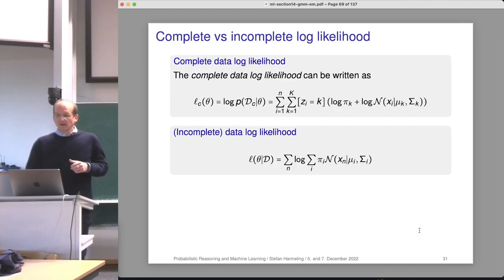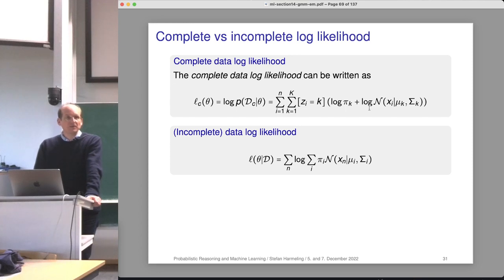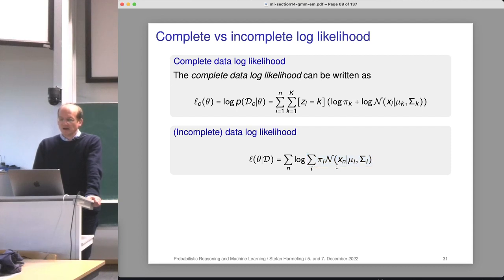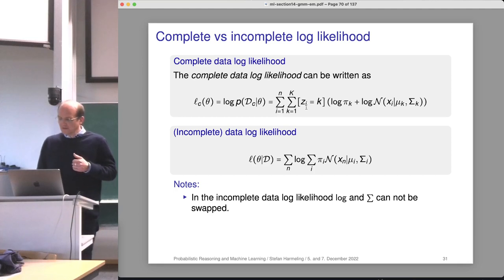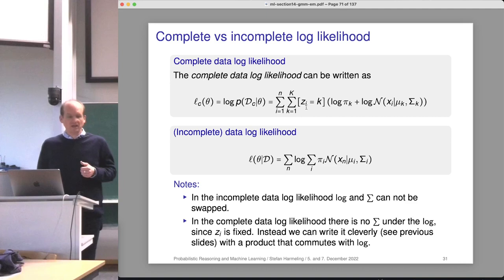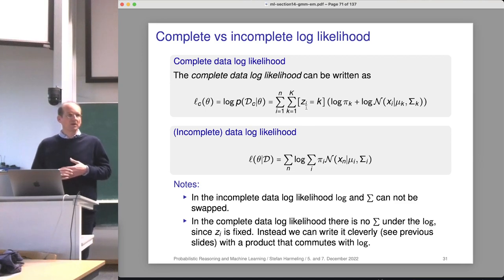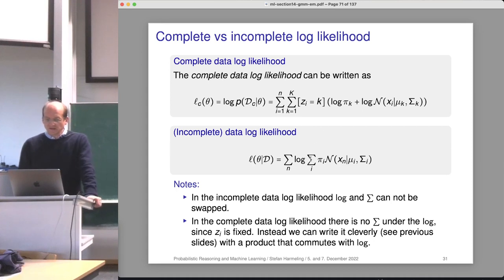Let's compare the expressions. We now have the complete data log likelihood which is nice and easy when taking derivatives. In the incomplete data log likelihood, we unfortunately have the logarithm of a summation which cannot be simplified — every parameter is more coupled with every other parameter. By introducing the latent variable Z, we split them. In the incomplete data log likelihood, the logarithm and the summation cannot be swapped, but in the complete data log likelihood, there's no problem because we have a product, not a sum — since we know the right class for each point.